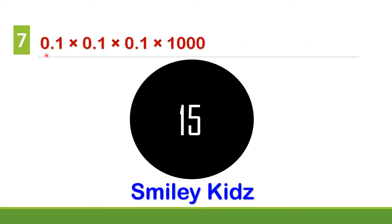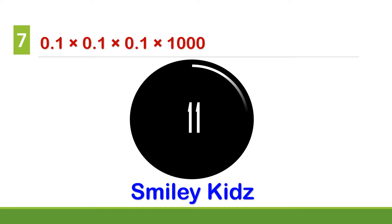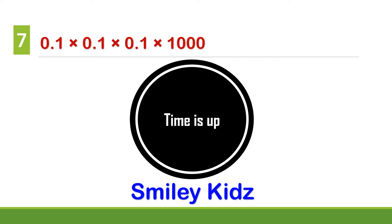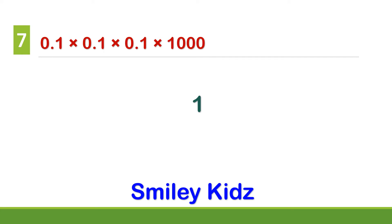Question number 7. 0.1 multiplied by 0.1 multiplied by 0.1 multiplied by 1000 is? Your time starts now. Your time is up. The correct answer is 1. 0.1 multiplied by 0.1 multiplied by 0.1 multiplied by 1000 is 1.